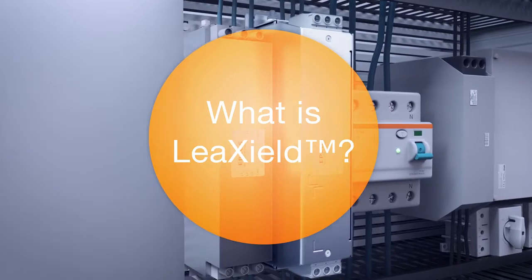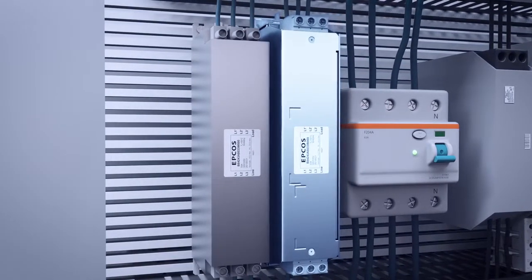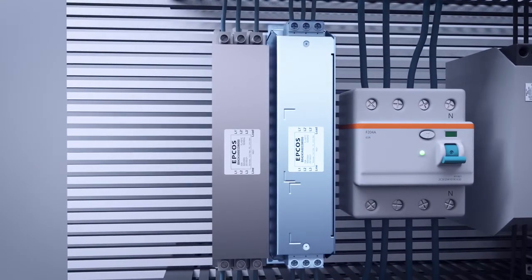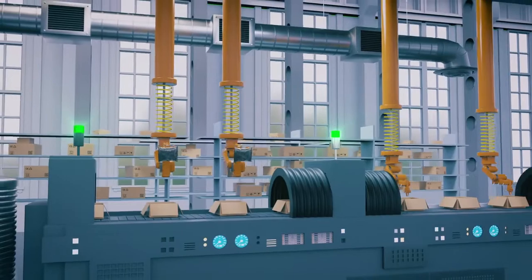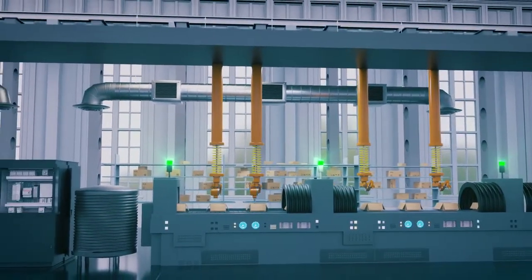LeakShield is an easy to integrate compact solution ready to be installed between the RCD and the EMC filter. There's no need for an external power supply and most important, it drastically reduces leakage currents across a wide spectral range, improving RCD compatibility.